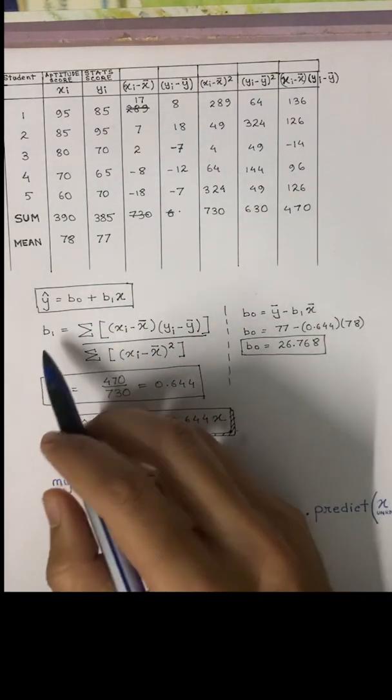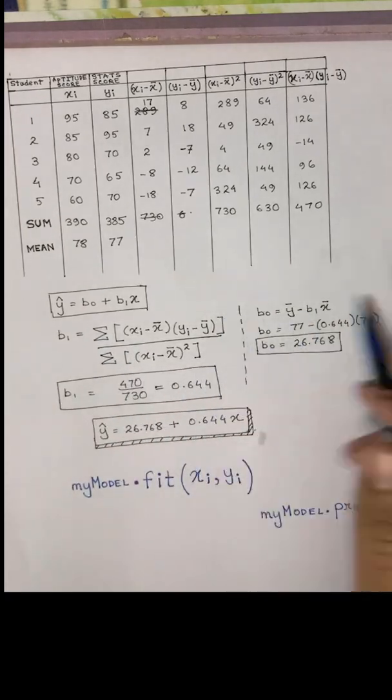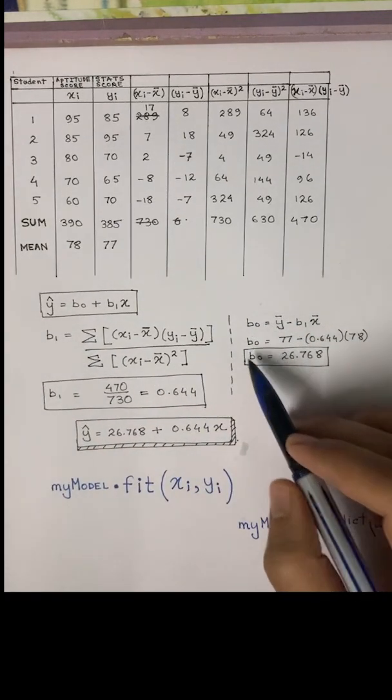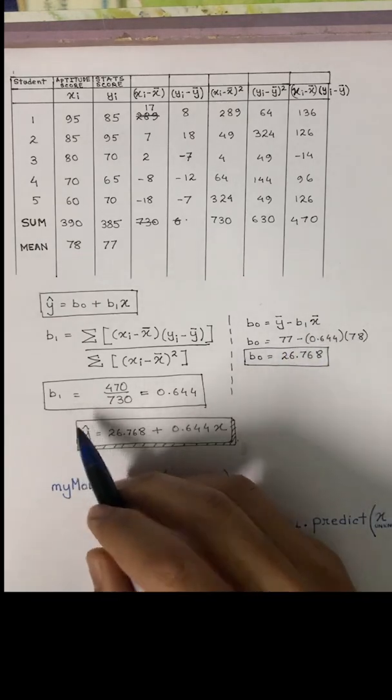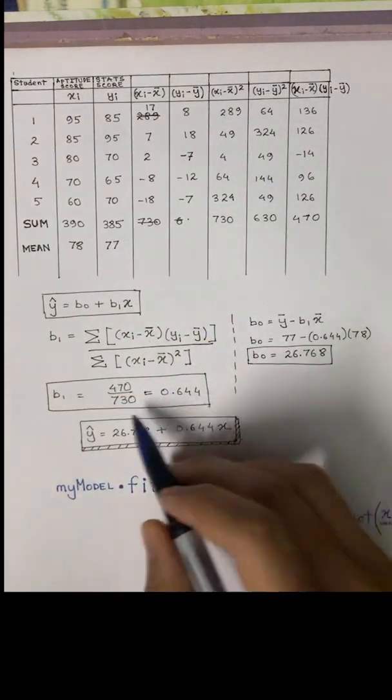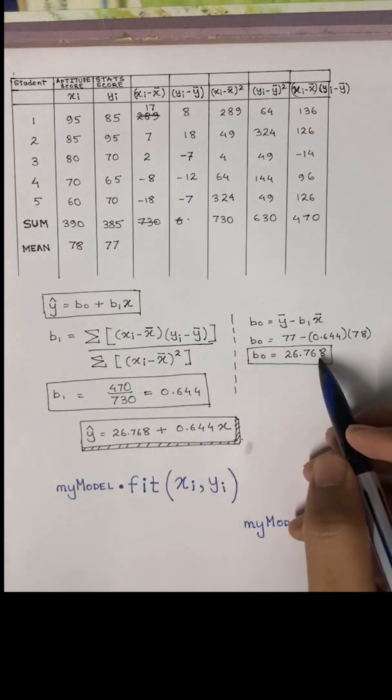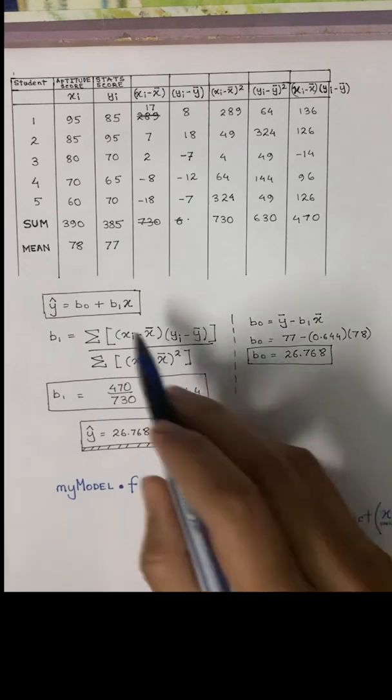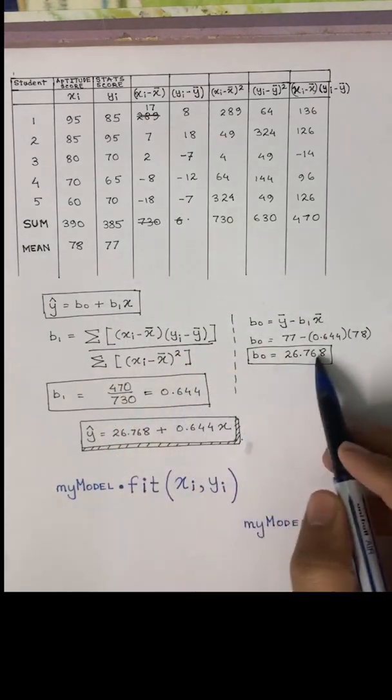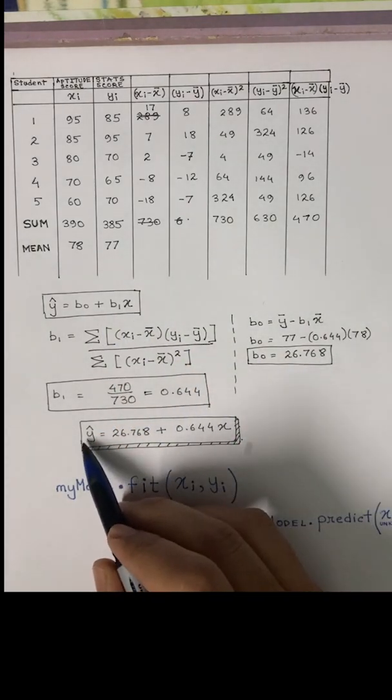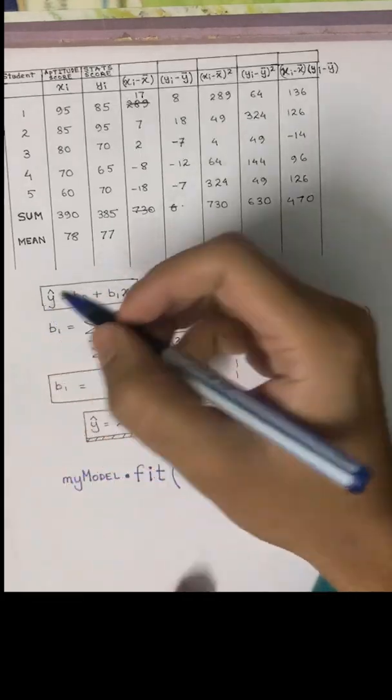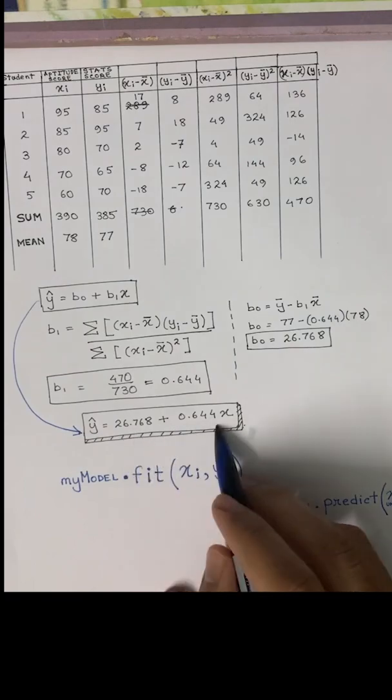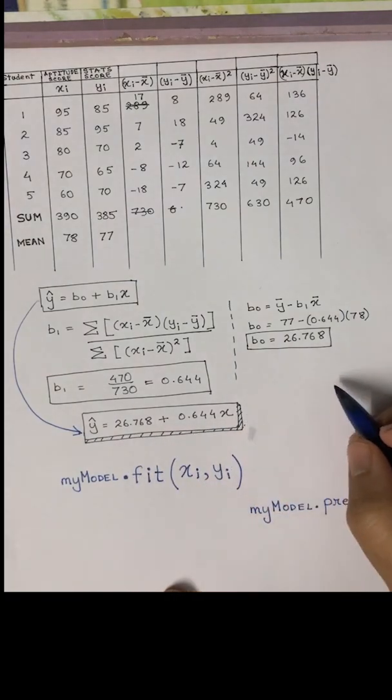The formula of the slope is given here and the formula of the y-intercept is given here. Putting the values into the formula, we get the b1 and b0 expressions. Now we can replace b1 and b0 with the respective values that we have calculated, and we get the final equation. If we plot a line, we will see that most of the data points probably fit into this line.